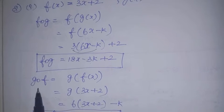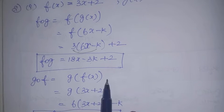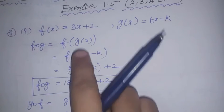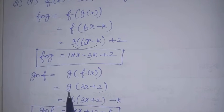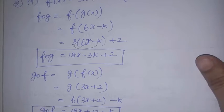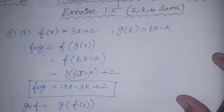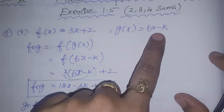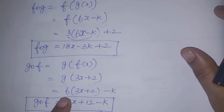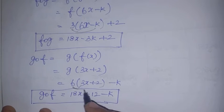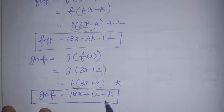Next, g∘f equals g of f of x, which equals g(3x + 2). Since g(x) = 6x - k, we substitute: 6 into (3x + 2) minus k. Multiplying: 6 × 3 = 18x, 6 × 2 = 12, minus k. So g∘f = 18x + 12 - k.